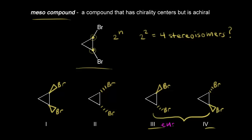So three and four are enantiomers — non-superimposable mirror images. We could have guessed that by looking at the drawing, because at this carbon we have bromine coming out at us in space, and the other stereoisomer has bromine going away from us — that's an opposite configuration. And at this carbon we go from a dash to a wedge, so that's an opposite configuration here too. Since we have opposite configurations at all chirality centers, we would expect these two to be enantiomers.